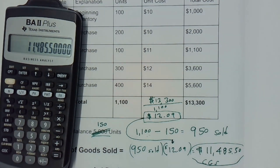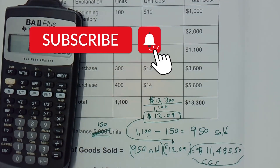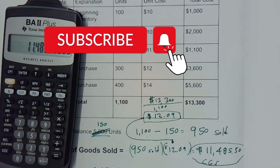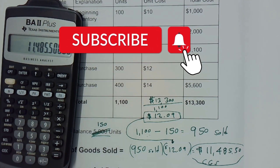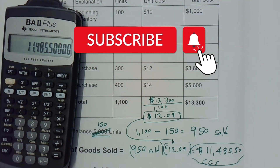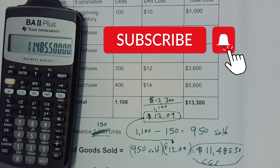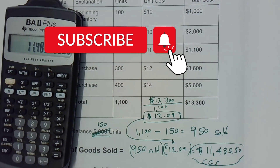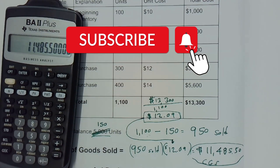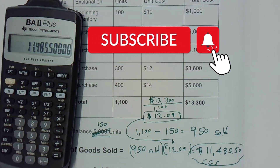That is our cost of goods sold — that's how easy it is to calculate it. That's all I have for you in today's video. If you like this content and would like to see more accounting videos, subscribe to my channel and hit that notification bell so you never miss a video.